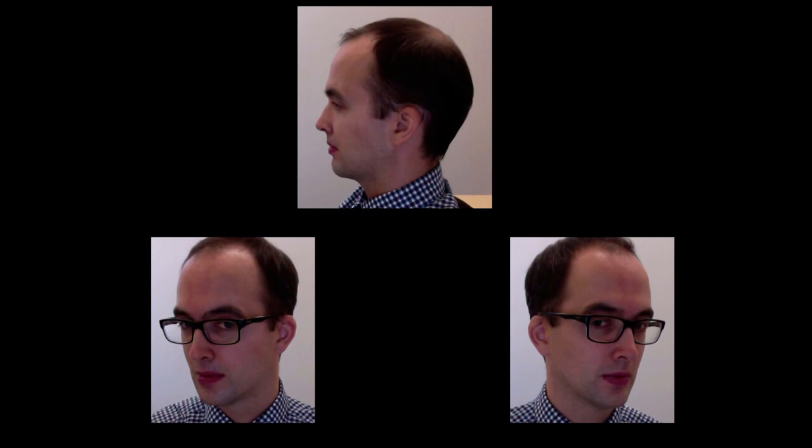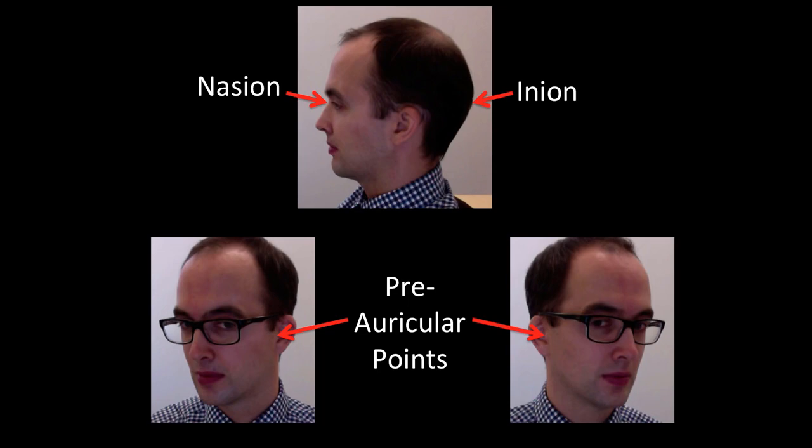First, we will start with the terminology. The system by which EEG electrodes are applied to the head and then displayed on EEG recordings is called the International 10-20 system. This is a standard method of measuring the head and placing electrodes. It depends on four main positions: the nasion at the bridge of the nose, the inion at the bony prominence at the back of the head, and two preauricular points just anterior to each ear.